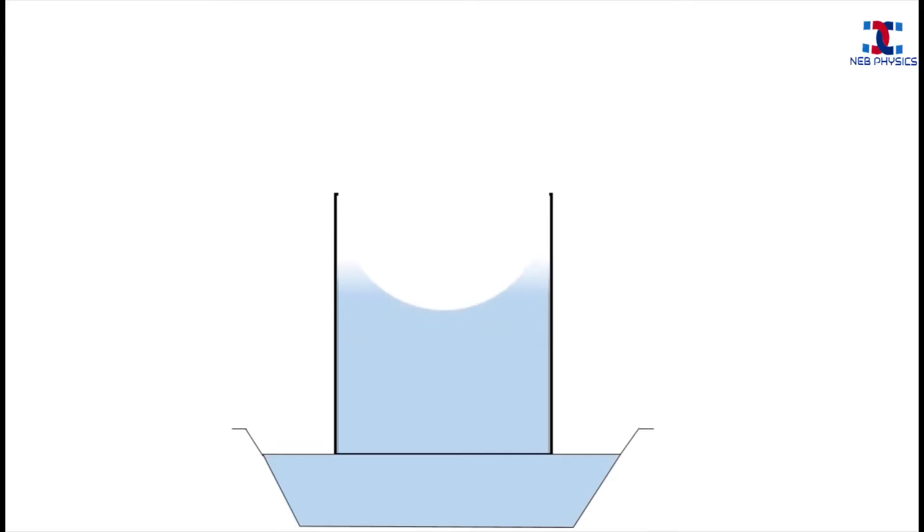For the liquid to rise in the capillary tube, the adhesive force must be greater than the cohesive force. When liquid rises in the tube, it forms a concave meniscus at the surface.